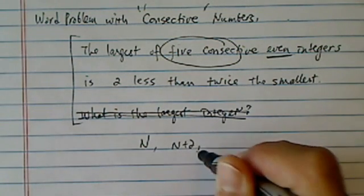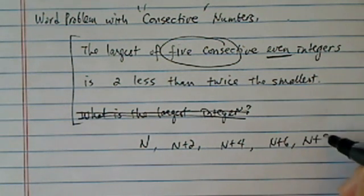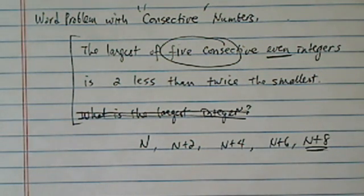Next one is n plus 2, n plus 4, n plus 6, and n plus 8. So my largest one is n plus 8. Okay, n is my smallest one over here.